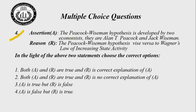Question number four. Assertion A: The Peacock-Weisman Hypothesis was developed by two economists — L.N.T. Peacock and Jack Weisman — yes, this statement is true. Reason: The Peacock-Weisman Hypothesis is vice versa to Wagner's Law of Increasing State Activity — this statement is wrong. It is not completely vice versa to Wagner's Law. So the right answer for this question is choice number three — A is true but R is false.